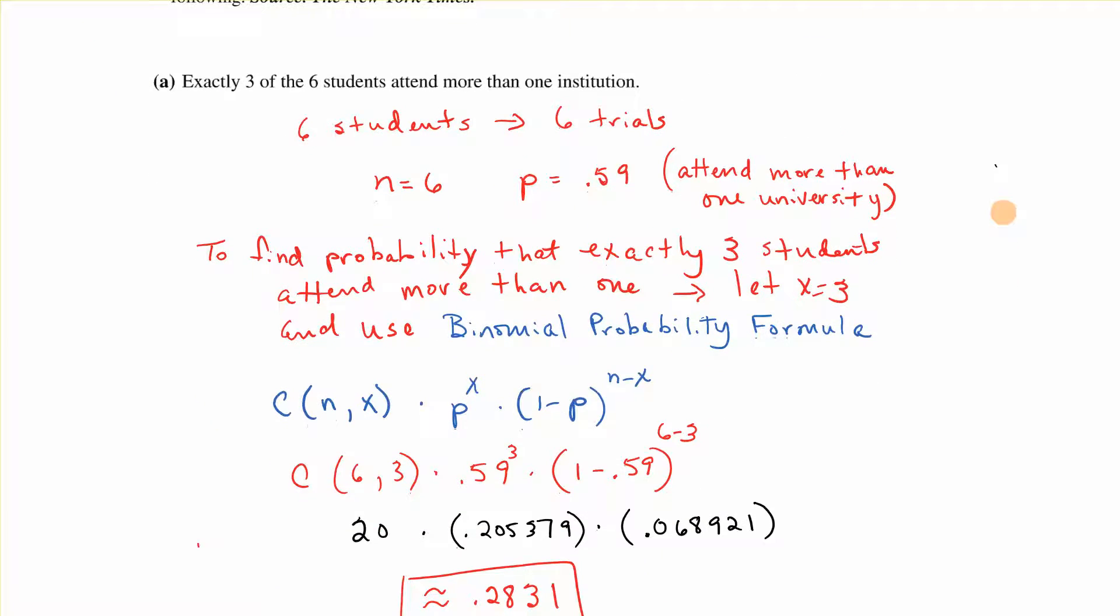Remember that we have a combination of N things taken X at a time. So combination of 6, 3 times P to the X is 0.59. X is in this case 3, so 0.59 to the third times 1 minus 0.59 raised to the N minus X, so 6 minus 3.